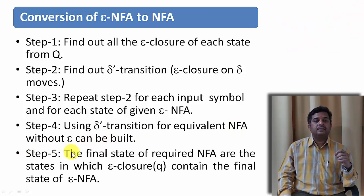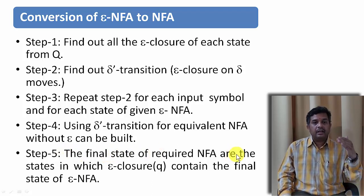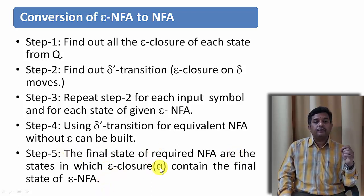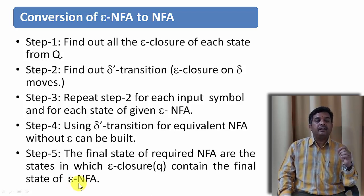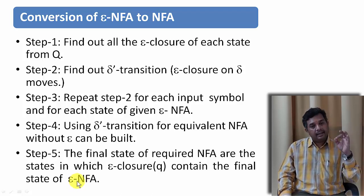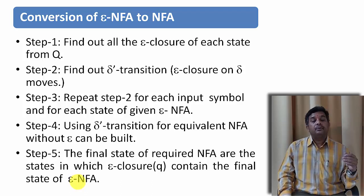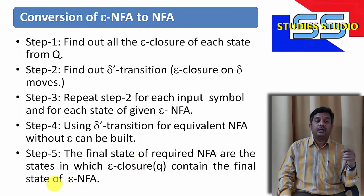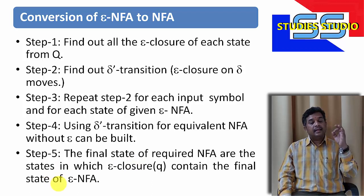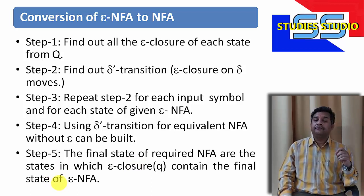The final step is: the final states in the required NFA are the states in which the Epsilon closure of Q contains the final state of the Epsilon NFA. It means, whenever we have an Epsilon NFA with a final state, from whichever state we can reach the final state of the Epsilon NFA via Epsilon transitions, we will say that is also a final state of the required NFA.